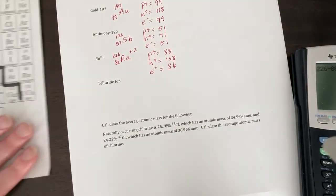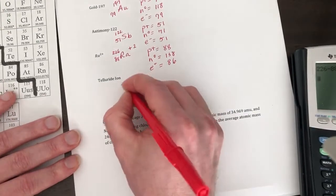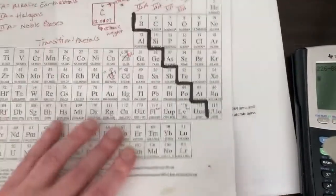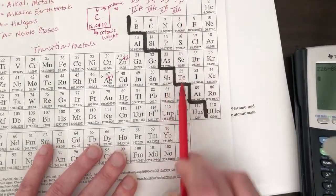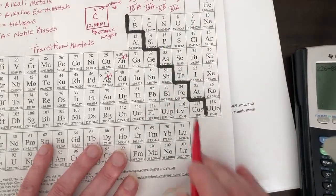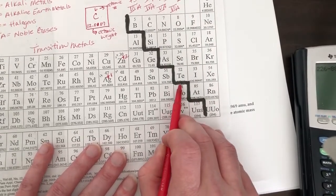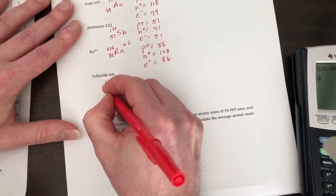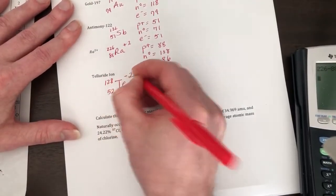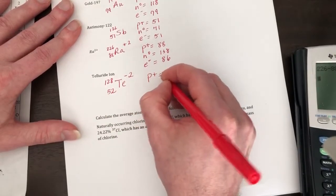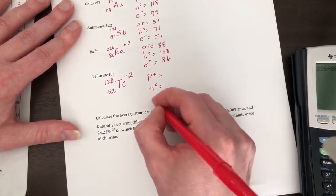Okay, telluride ion. So telluride is TE. It's right here. It's in the minus 2 column, so it has a minus 2 charge. Its weight is 128. So your protons are gonna be 52.